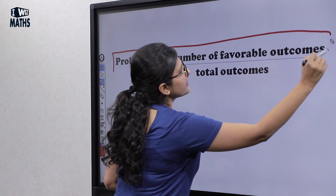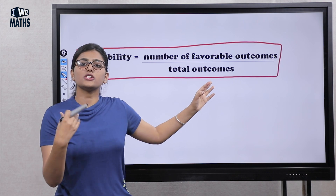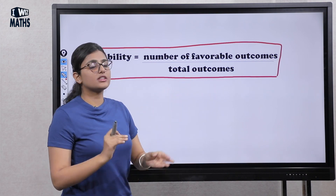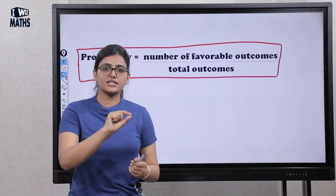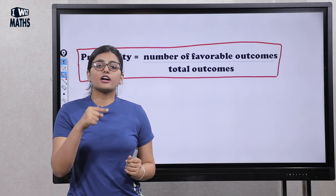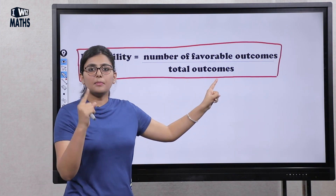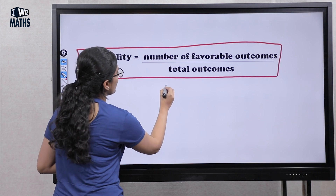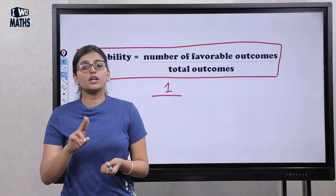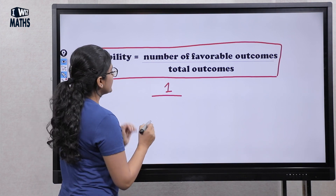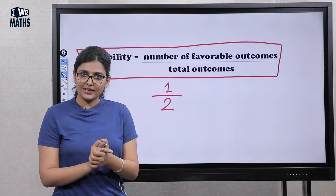The formula is: probability equals number of favorable outcomes divided by total outcomes. Favorable outcomes means what we need, and total outcomes are all possible results. For example, if I toss a coin, either it will be heads or tails. The favorable outcome — heads — is 1, and the total outcome is 2. So the probability of heads is 1 by 2, which is half, or 50-50 chances.